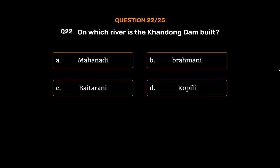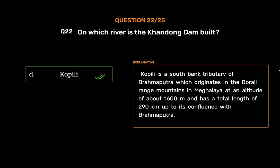The correct answer is Option D: Koppili. Koppili is a south bank tributary of the Brahmaputra which originates in the Borail Range mountains in Meghalaya at an altitude of about 1,600 meters and has a total length of 290 kilometers up to its confluence with the Brahmaputra.